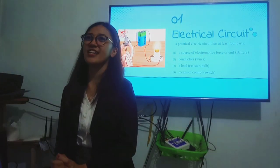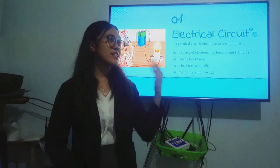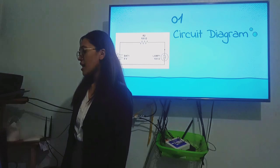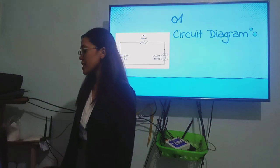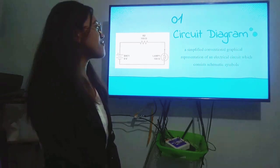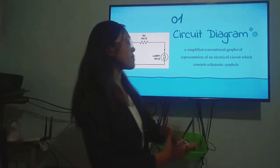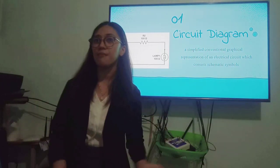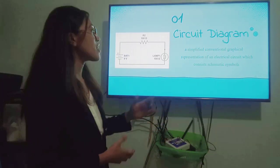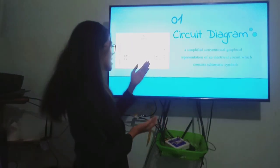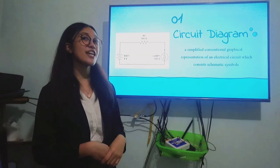And last is the means of control which is the switch. Familiar items, right? These are the ones that we had discussed or identified in the first part of our plan. Now, let us define what is a circuit diagram. A circuit diagram is a simplified conventional graphical representation of an electrical circuit which consists of schematic symbols. The keywords here are representation of an electrical circuit. This is an example of a circuit diagram.